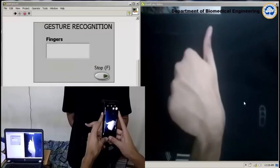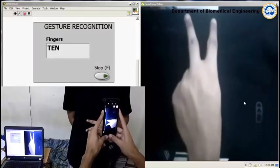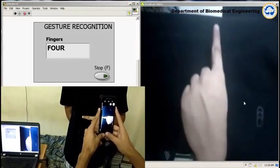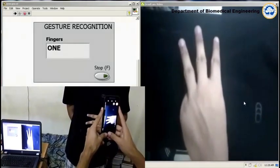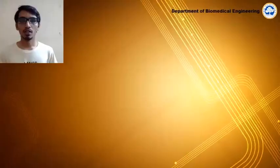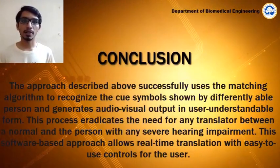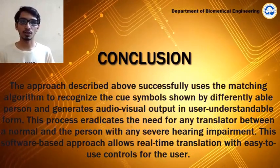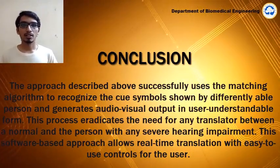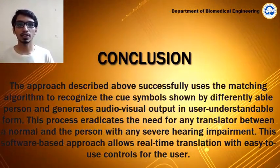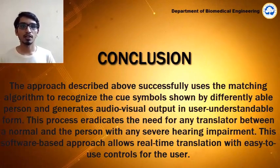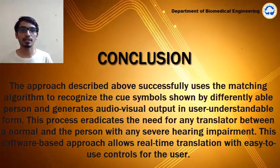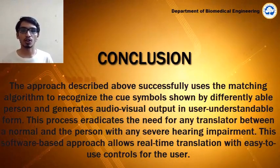In the demo, the system successfully recognizes number signs including 10, 2, 4, 1, and 6. To conclude, the inverse matching algorithm is used to decide what sign is being shown by the user. The idea was applied to recognize American Sign Language numbers from 0 to 10, as well as a few alphabets. The same algorithm can also be used to recognize short phrases or sentences shown by a deaf person, and can easily convert them into textual or audio output for a normal person.